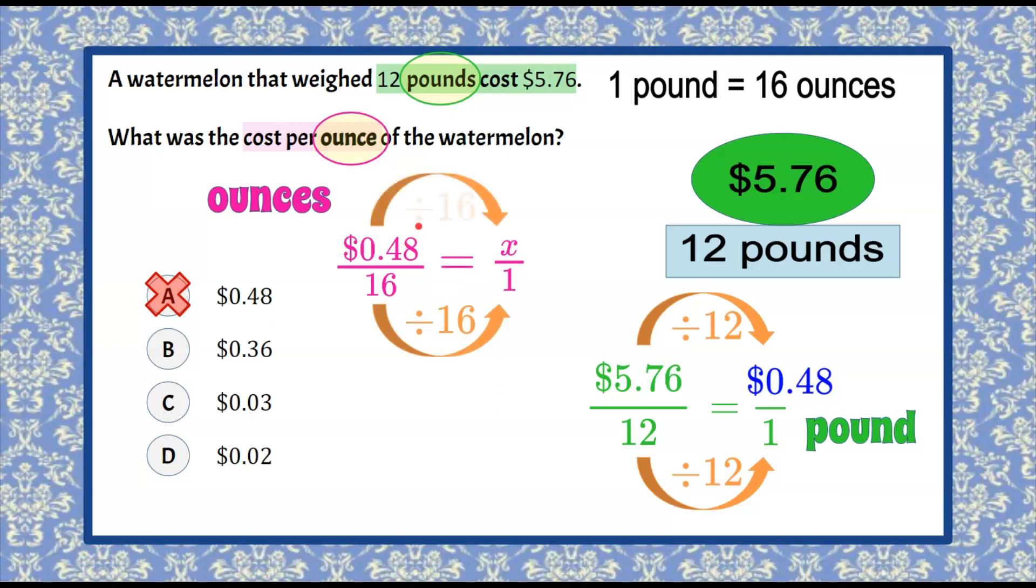48 cents divided by 16 using our calculator is 3 cents, 0.03, which is 3 cents. And that is answer choice C. The cost per ounce of the watermelon was 3 cents.